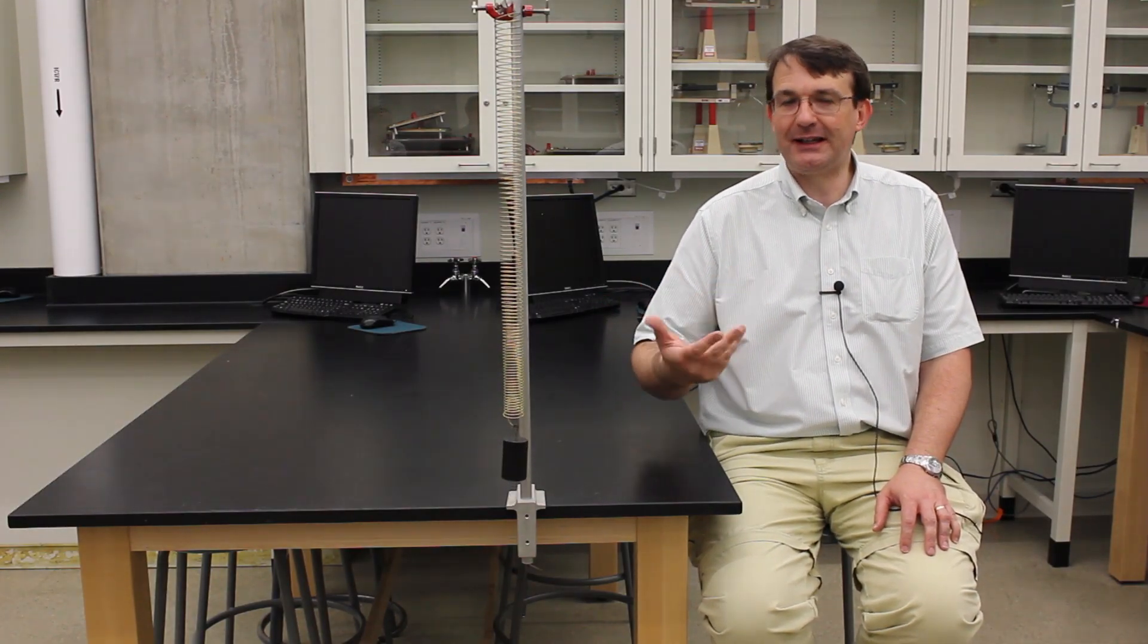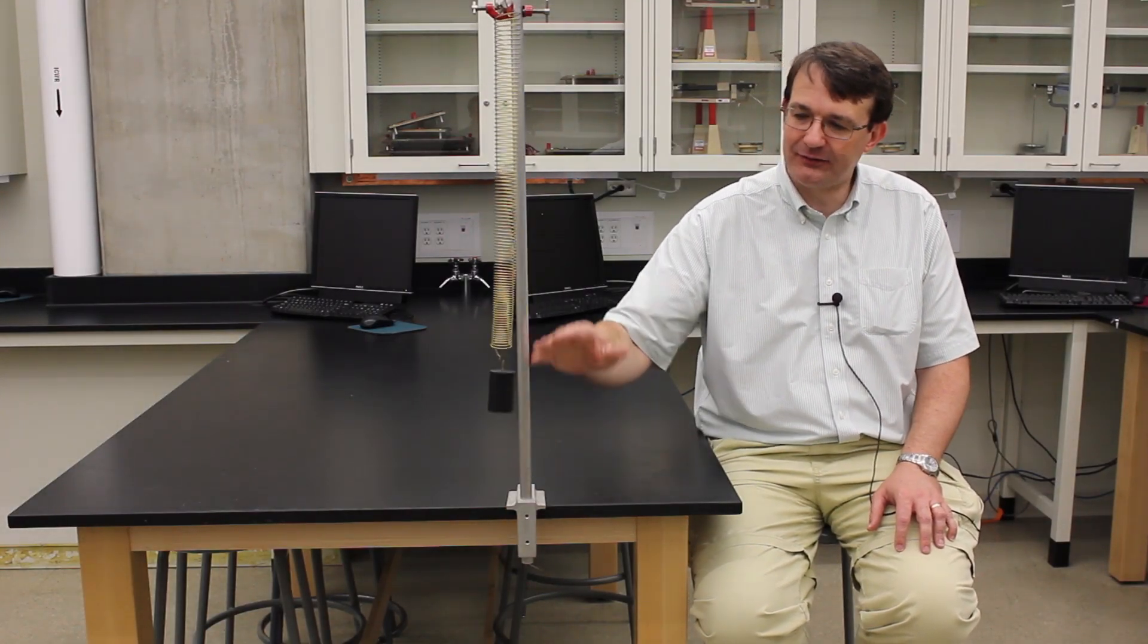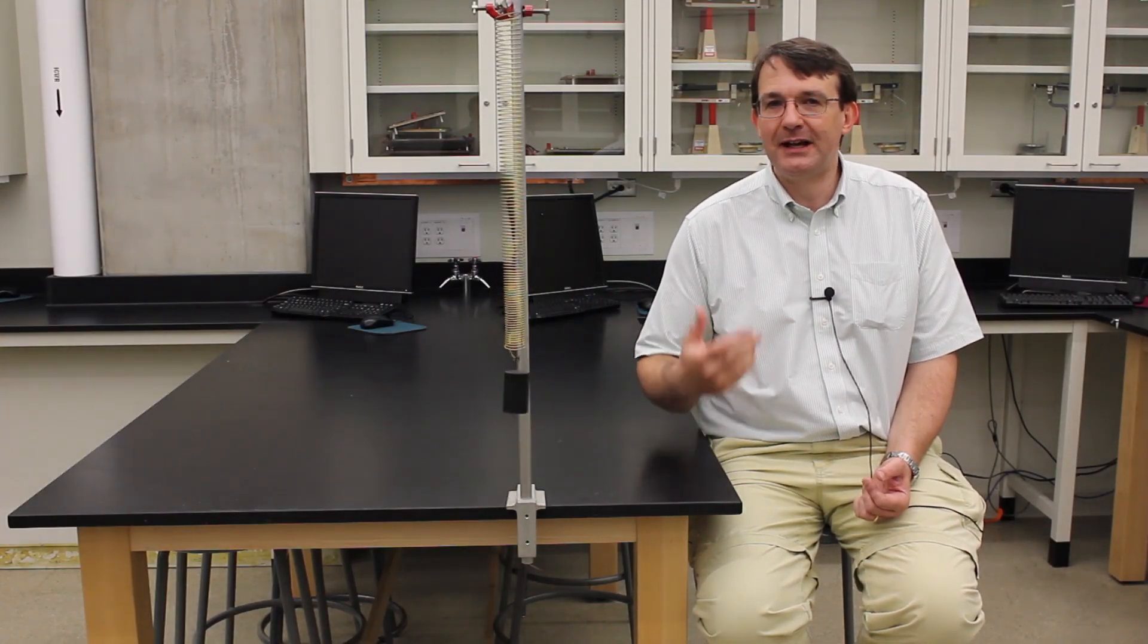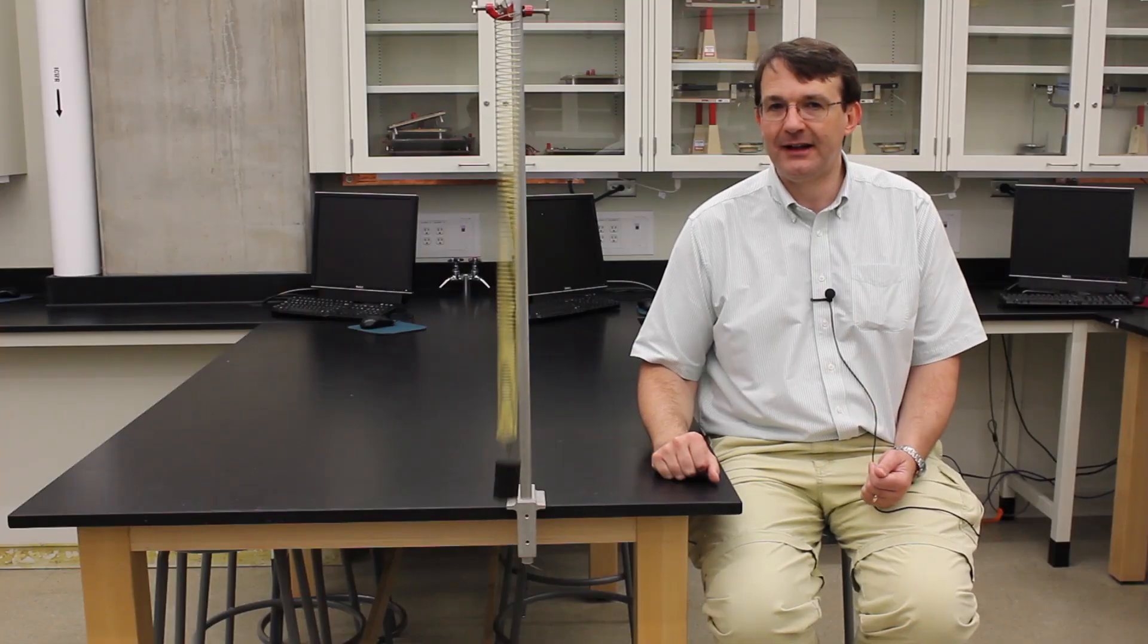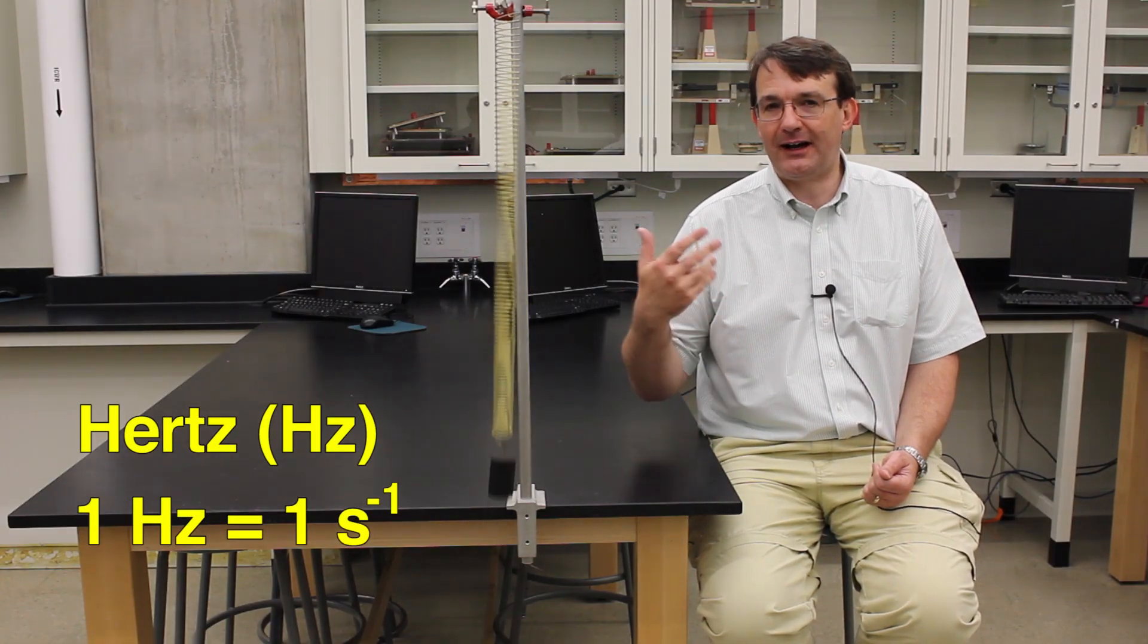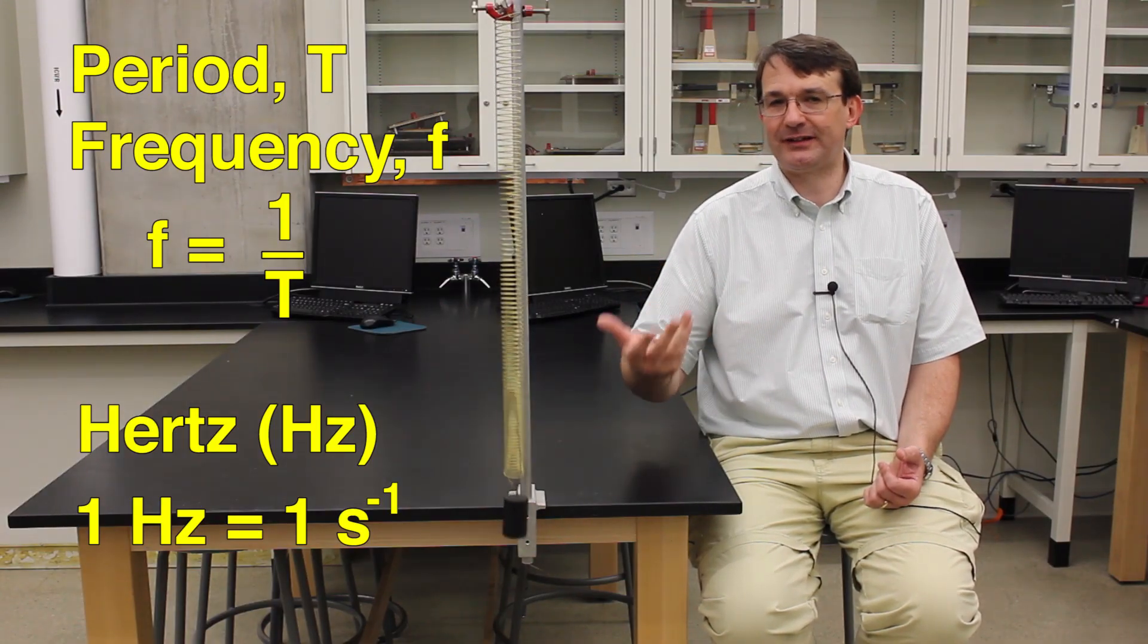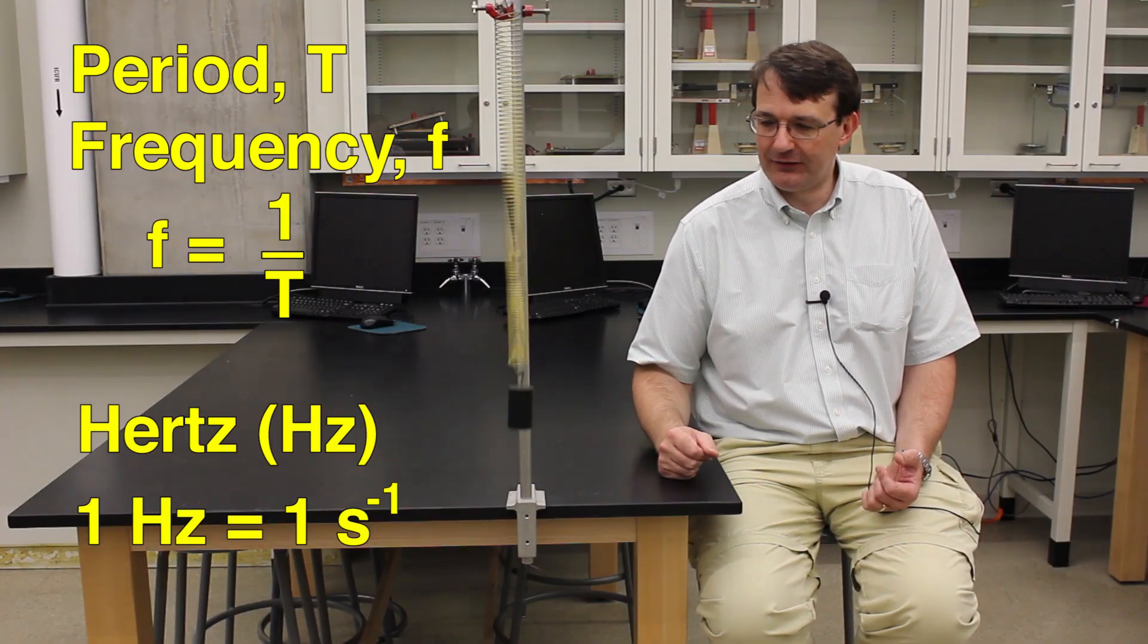As well as the period of an oscillation, for some oscillators, particularly those that have very short periods, a more useful quantity is what we call frequency. Frequency is defined as the number of cycles that an oscillator will complete in one second. The units for frequency are seconds to the minus one, and in the SI system, we call that unit the hertz. And the relationship between frequency and period is that frequency equals one divided by the period.